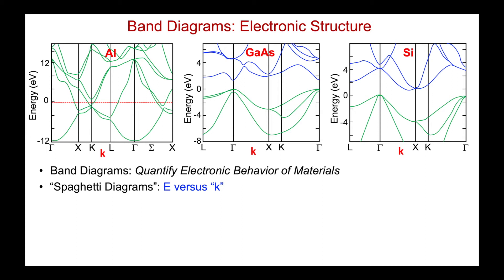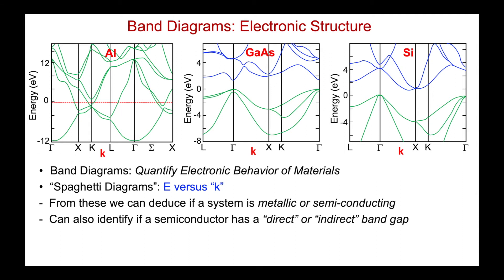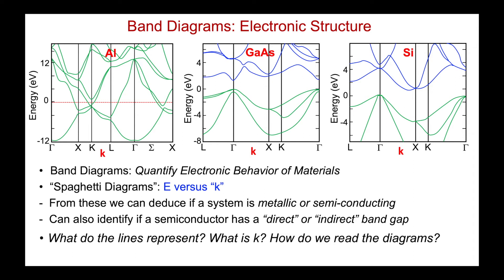Here are some band diagrams for three different systems: aluminum metal, gallium arsenide, and silicon, which are both semiconductors. They're sometimes jokingly called spaghetti diagrams because it looks as though we've hung spaghetti all over a rack. But what's being plotted here? Clearly we're plotting energy on the left axis and k on the bottom. From these diagrams, believe it or not, we can deduce if a system is metallic or semiconducting, and we can also identify if that semiconductor has what's called a direct or indirect band gap. But what do these lines represent, what is k, and how do we read these diagrams to interpret the electronic behaviour of a material system?